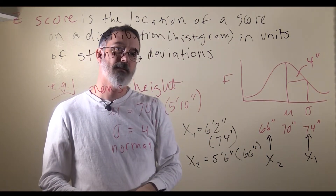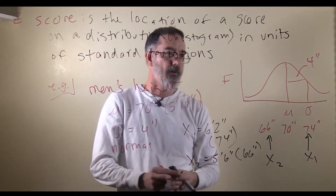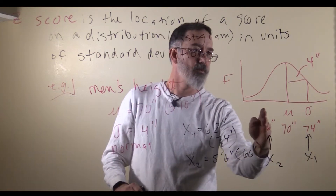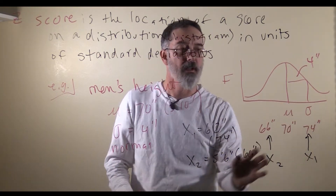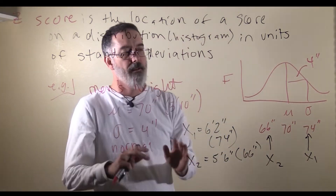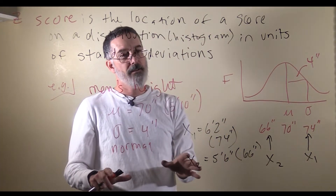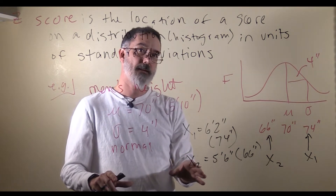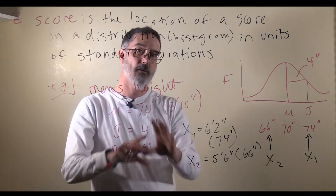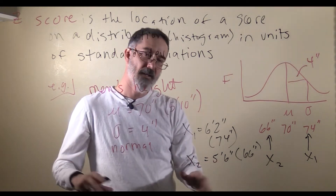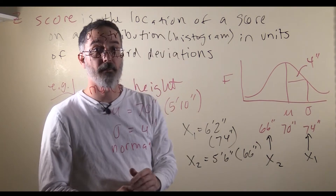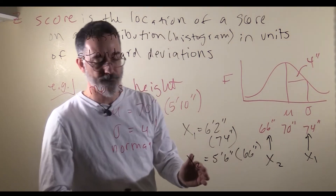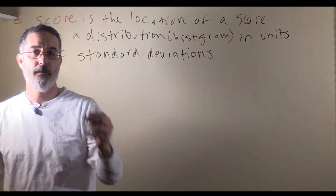Another way to think about z-scores: they provide the location of an individual on a distribution, and that is analogous to how you can use longitude and latitude to find a location on a map. It is similar, though clearly different — but there is a certain similarity there.